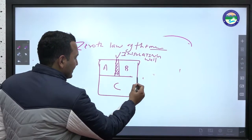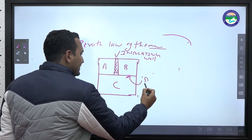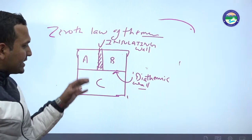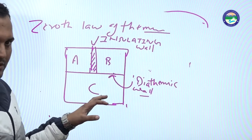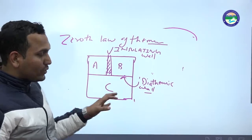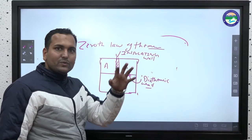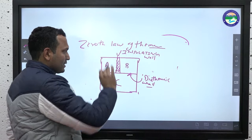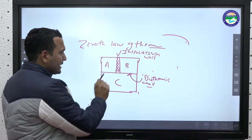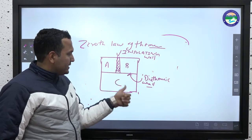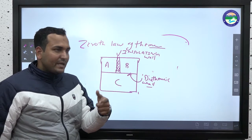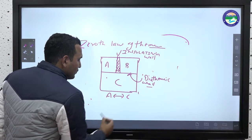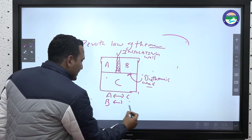C is separated by a diathermic wall. A diathermic wall allows heat to flow from higher to lower temperature. Heat can flow from A to C or from C to A. According to the zeroth law of thermodynamics, if we have three systems A, B, and C — A and B separated by an insulating wall and C by a diathermic wall — after some time, A and C will be in thermal equilibrium and B and C will also be in thermal equilibrium.